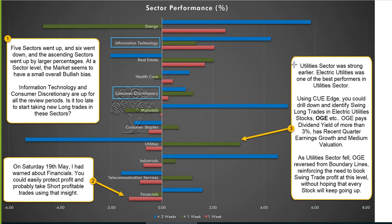We start with sector performance analysis. Every week we study 11 sectors across three review periods. The red bar indicates performance of this week, the green bar one week prior, and the blue bar two weeks prior — together giving us about one month of performance. Any bar to the right of the zero line indicates the sector went up; any bar to the left indicates it went down.